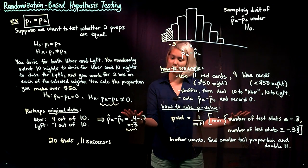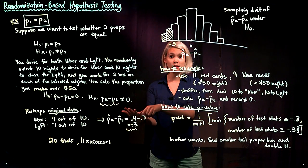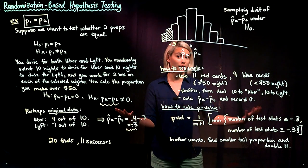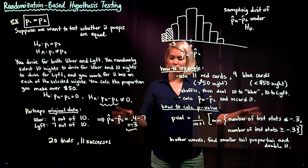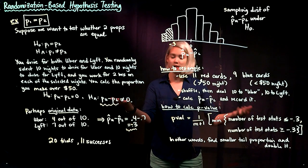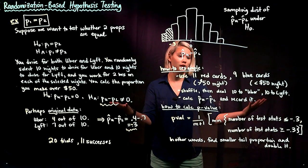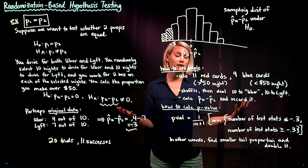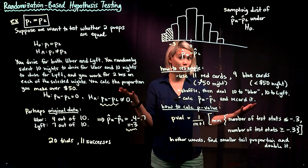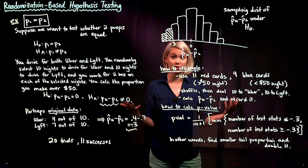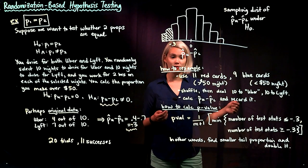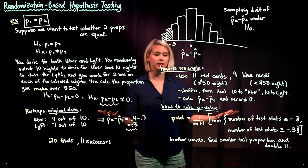We flip the cards over and count how many red cards Uber has and how many red cards Lyft has. For example, if Uber has 50% and Lyft has 50%, then our test statistic P Uber hat minus P Lyft hat would be 0.5 minus 0.5, or 0. We record that test statistic, and that represents one resample.